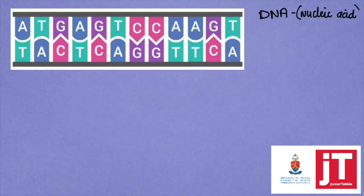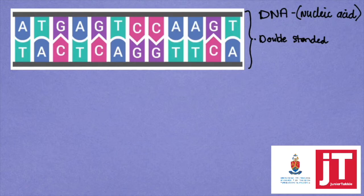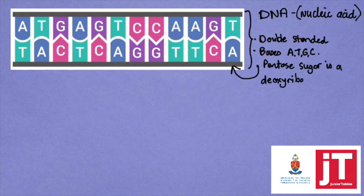Here we can see the double stranded DNA double helix. We find that our base pairs are paired up as we said before, where cytosine and guanine are complementary bases, with adenine and thiamine being the other pair of complementary bases. We see that this is a double stranded nucleic acid — a DNA nucleic acid — because we have two of these sugar phosphate backbones, one on each side. The sugar being deoxyribose in this case, because it is a double stranded DNA nucleic acid.